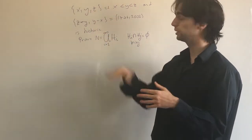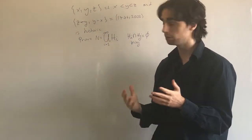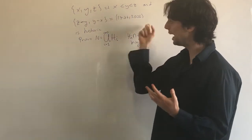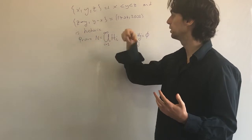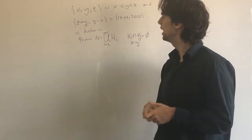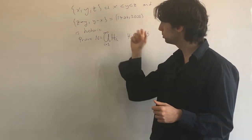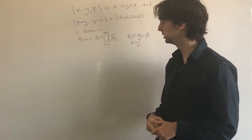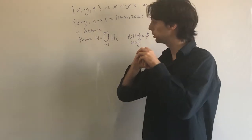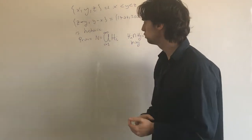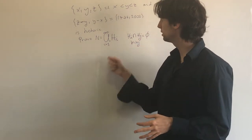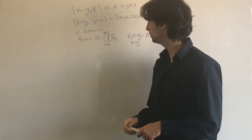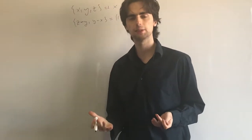Here is how I wrote down the problem on the board: a set {X, Y, Z} such that X < Y < Z, and such that Z − Y and Y − X equal 1776 and 2001 in some order — we call this set 'historic'. Prove that we can partition the natural numbers into disjoint historic sets.